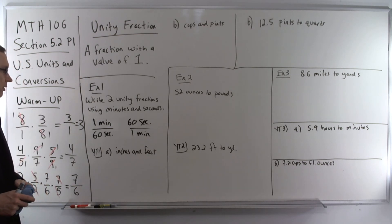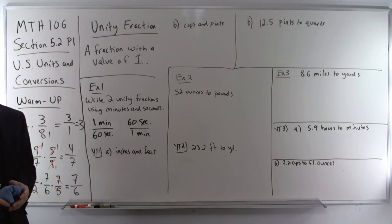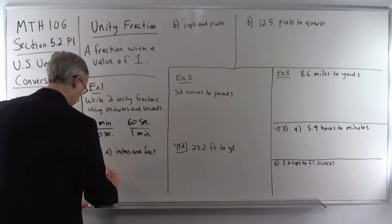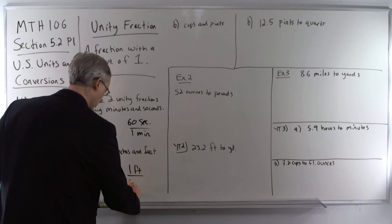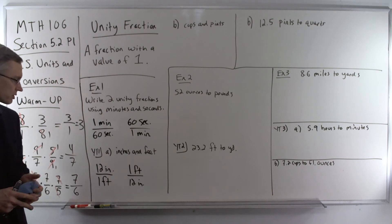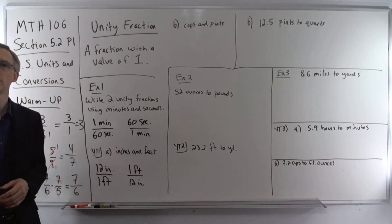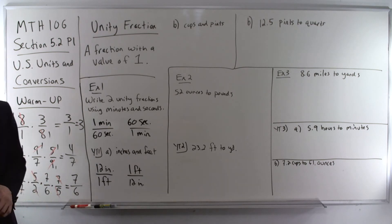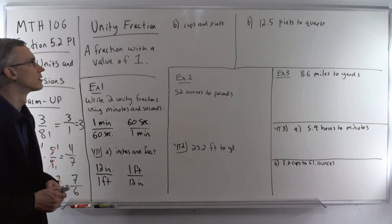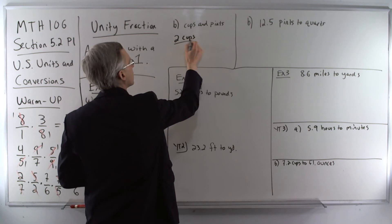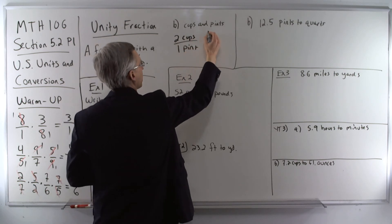Your turn number one: write two unity fractions for inches and feet. Since 12 inches equals 1 foot, we get 12 inches over 1 foot, or 1 foot over 12 inches. Next up, cups and pints — there are two cups in a pint, so we can write it that way or with pints on top.